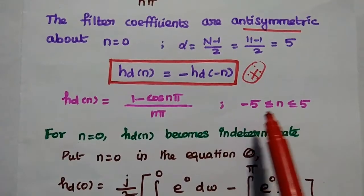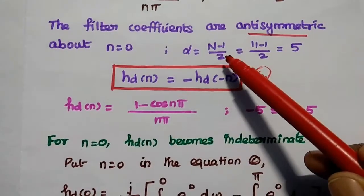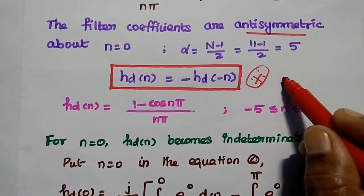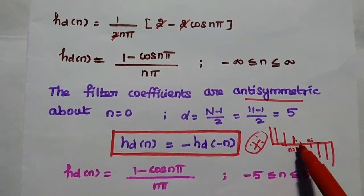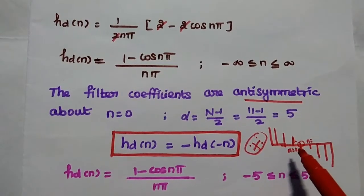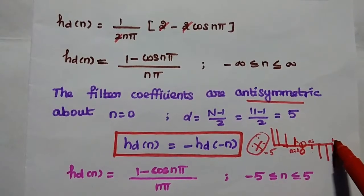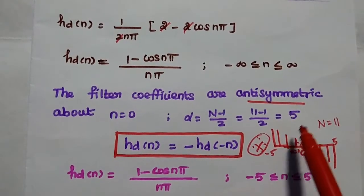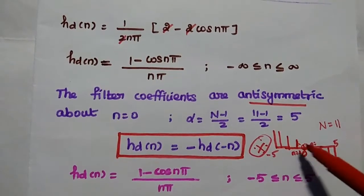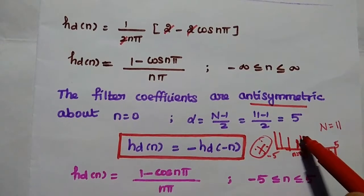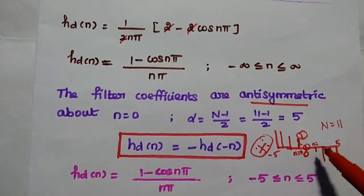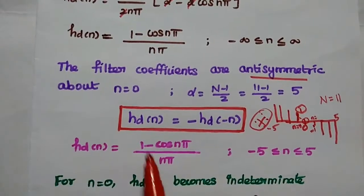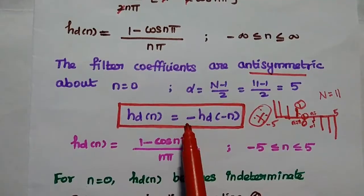We find hd(n) from minus 5 to plus 5 because (N minus 1) over 2 equals (11 minus 1) over 2, which equals 5. So we can have values from minus 5 to plus 5, giving a length of 11. These two sides are anti-symmetric: for example if hd(minus 1) equals 1, then hd(plus 1) equals minus 1, satisfying the condition hd(n) equals minus hd(minus n).